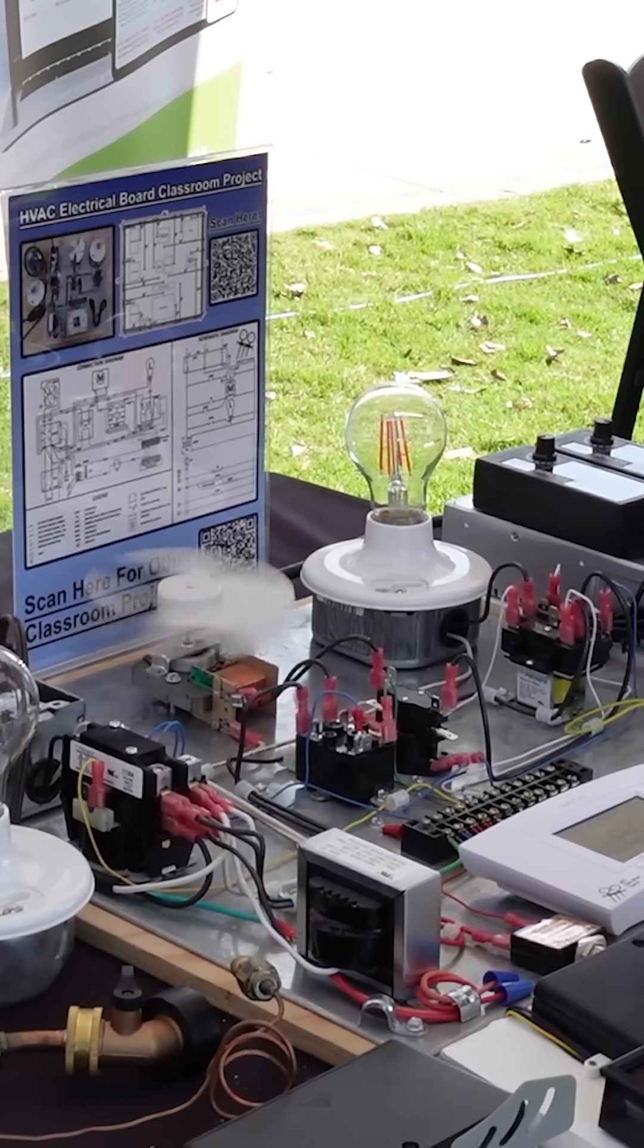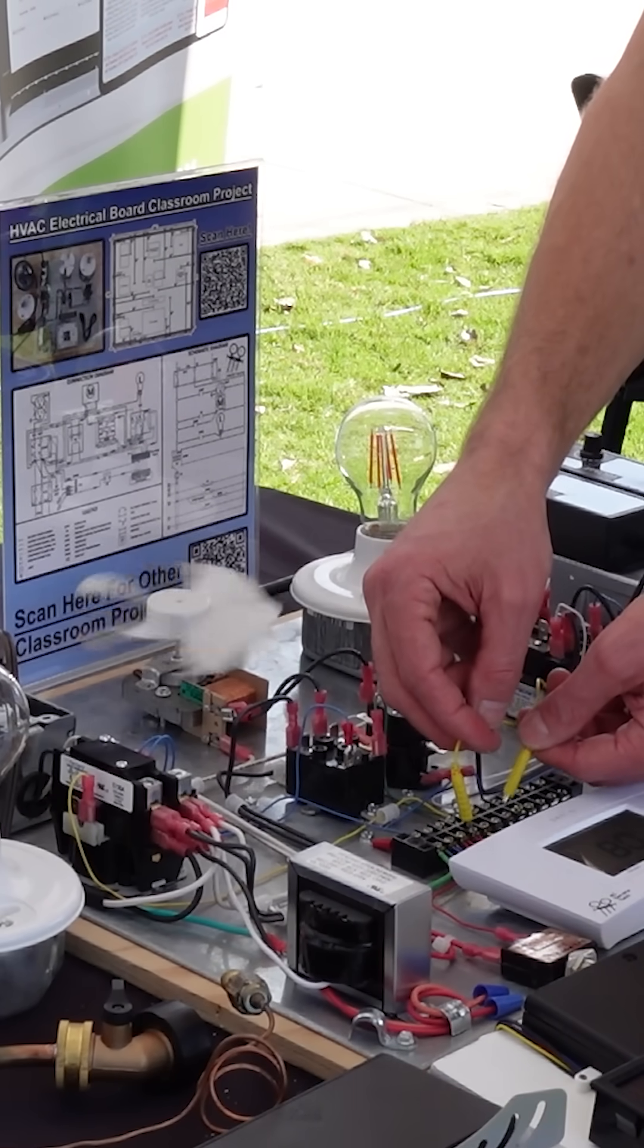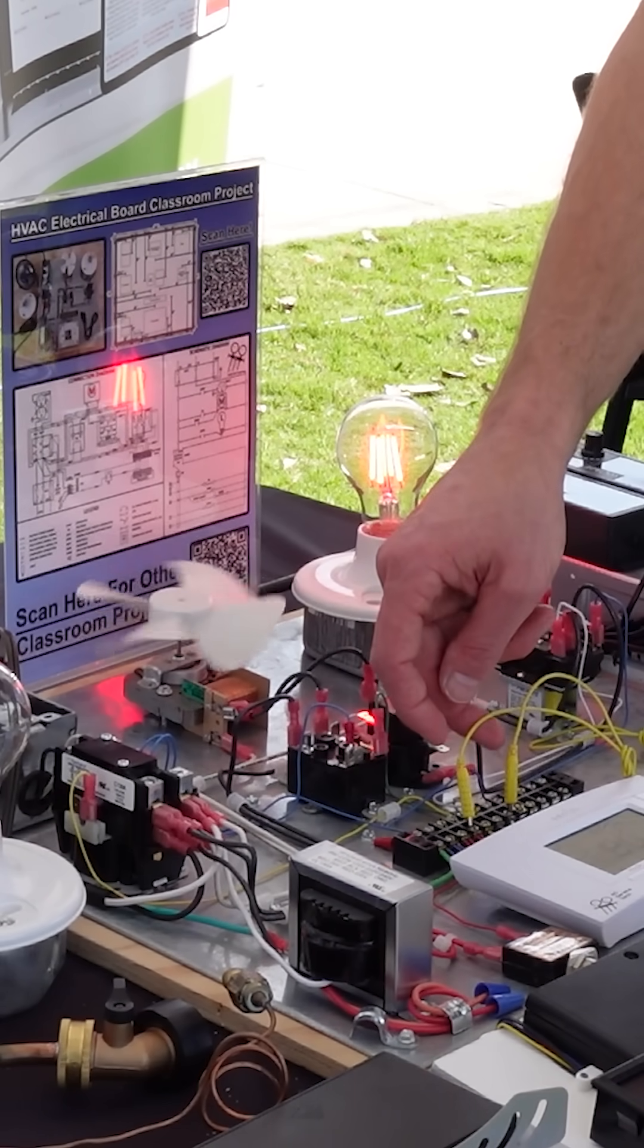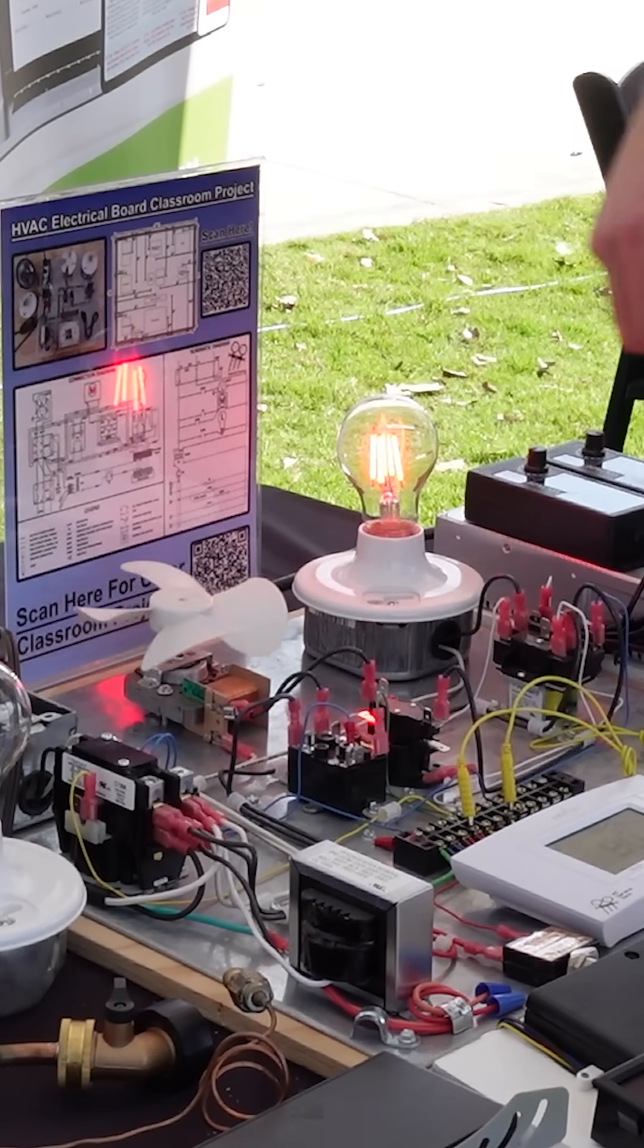And then for heating mode, what we do is we go from R to white. Oh yeah, you heard that. That relay is hurting.